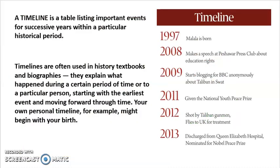So let's take a look at what is a timeline. A timeline is a table listing important events for successive years within a particular historical period. A timeline is just a line which has dates on it, and it tells you why that period or date is important. You will find timelines in your history textbooks and in biographies. I'm sure you have seen a timeline even in your Social Studies textbook. They tell us what happened during a certain period of a particular person, starting with the earliest event and moving forward.